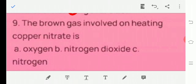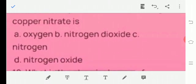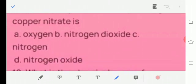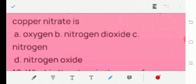Let's move to question number 9, the brown gas evolved on heating copper nitrate is A. Oxygen, B. Nitrogen dioxide, C. Nitrogen, D. Nitrogen oxide. Option number B. Nitrogen dioxide.